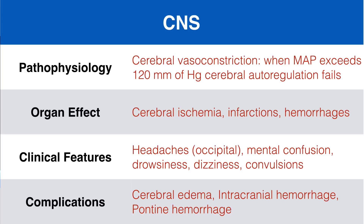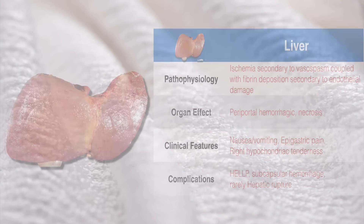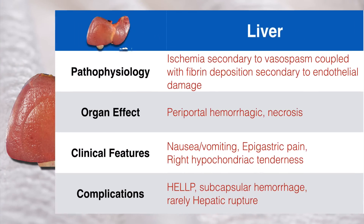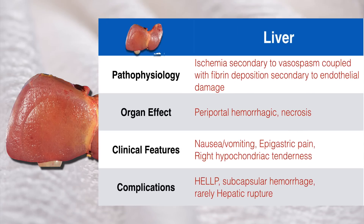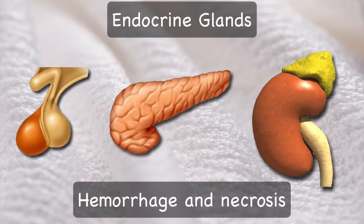Hemorrhage in the vision center can lead to cortical blindness. Hepatic damage resulting from ischemia secondary to vasospasm, coupled with fibrin deposition secondary to endothelial damage, leads to subcapsular hemorrhage, peripheral necrosis, infarctions, and rarely hepatic rupture. Liver damage is associated with clinical symptoms of nausea, vomiting, epigastric pain, and right hypochondriac tenderness. It also leads to mildly elevated liver enzyme levels. Microhemorrhage and necrosis may occur in endocrine glands like the pituitary, pancreas, and adrenal glands.